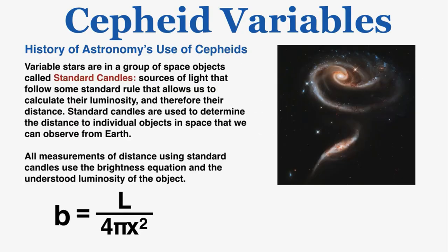One final note: variable stars belong to a group of objects called standard candles — sources of light that follow some standard rule allowing us to calculate their luminosity and therefore their distance using the brightness equation. Standard candles are used to determine the distance to individual objects in space observable from Earth. When using a standard candle, you'll also be using the brightness equation and the understood luminosity of the object.